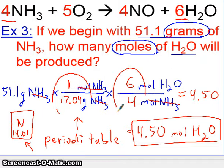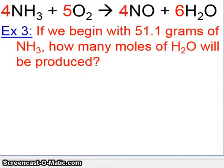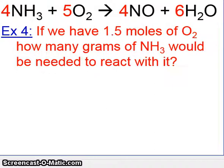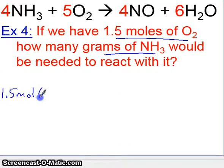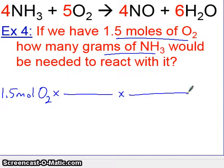Example two is the same thing, only involving two different substances. Here we're asked: if we have 1.5 moles of O2, how many grams of NH3 would we have? So now we're beginning with moles and ending with grams. In the previous one, we began with grams and ended with moles. Let's set it up again. We have 1.5 moles of O2 as our beginning. This is a two-step problem, because we go from moles of one to grams of another.